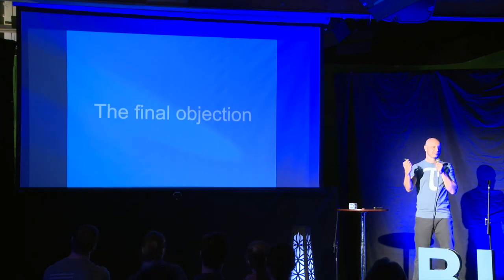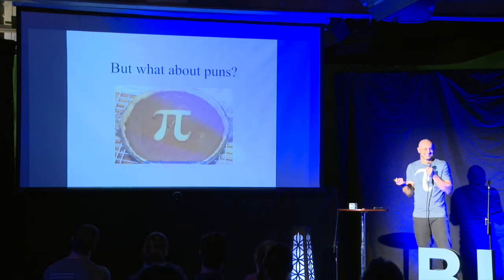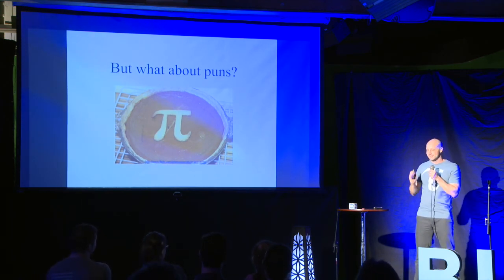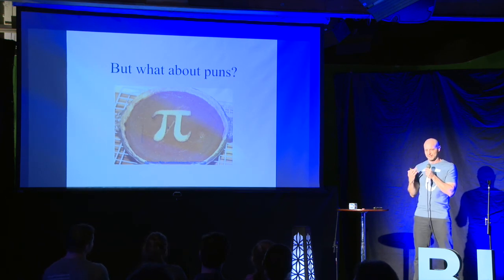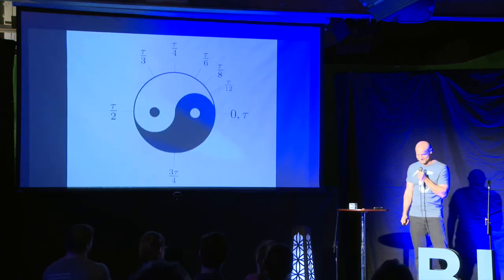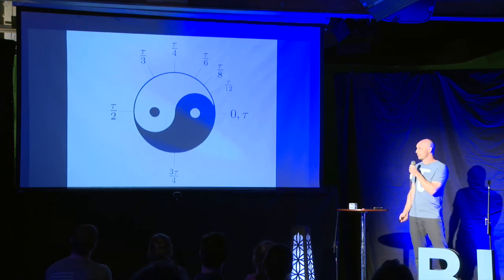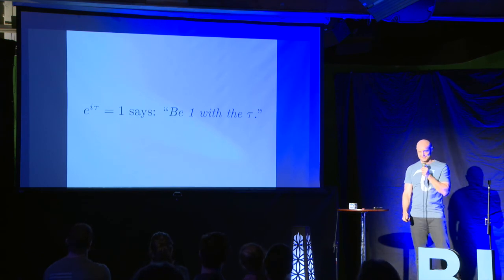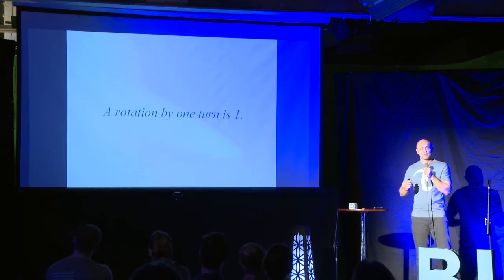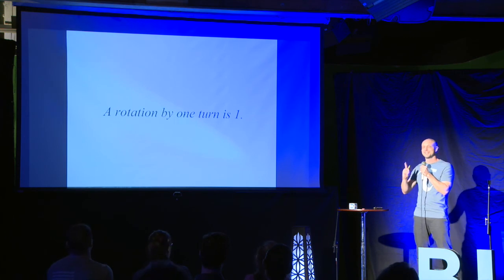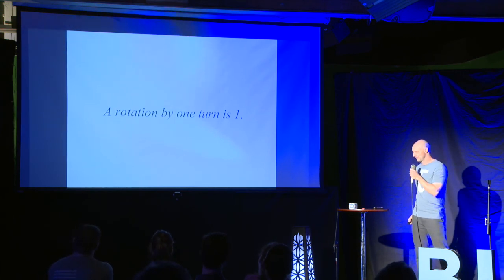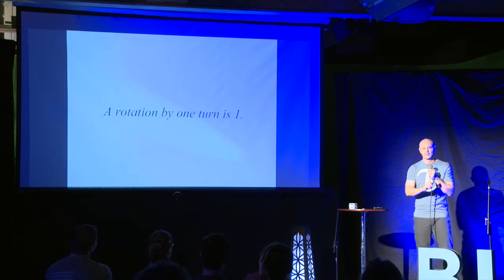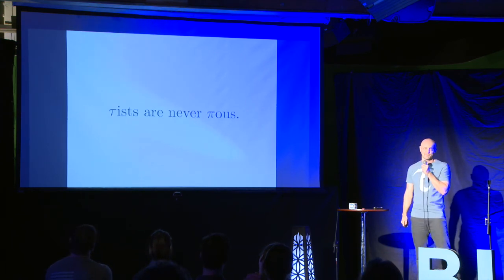We come now to the final objection: what about puns? Pi is so much fun — pi r round, pie in the sky. This just means you haven't fully accepted the doctrine of Tauism. Because as Tauists, we know that e to the i tau equals 1 says 'be one with the tau.' A rotation by one turn is 1 — may sound like a tau-tology, but in fact it is the true nature of the tau. We must remember that Tauism is based on reason, not on faith. Tauists are never pious.